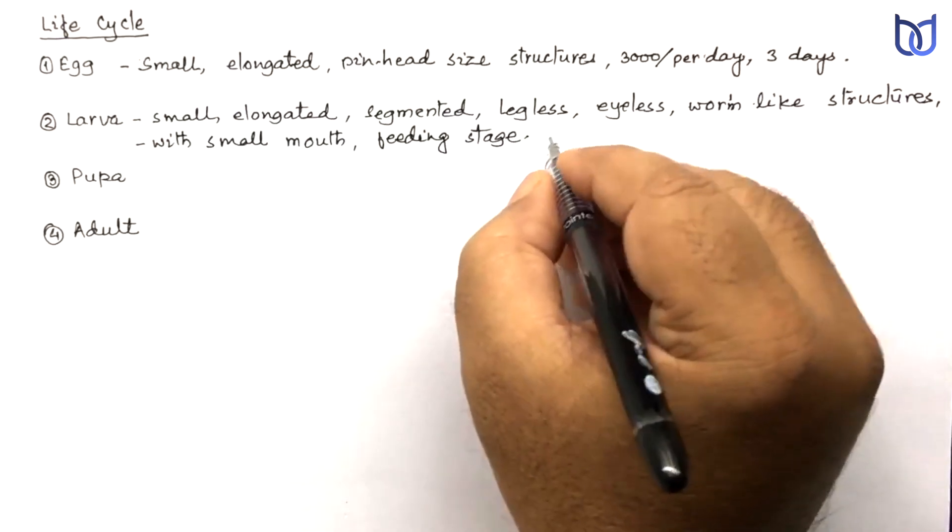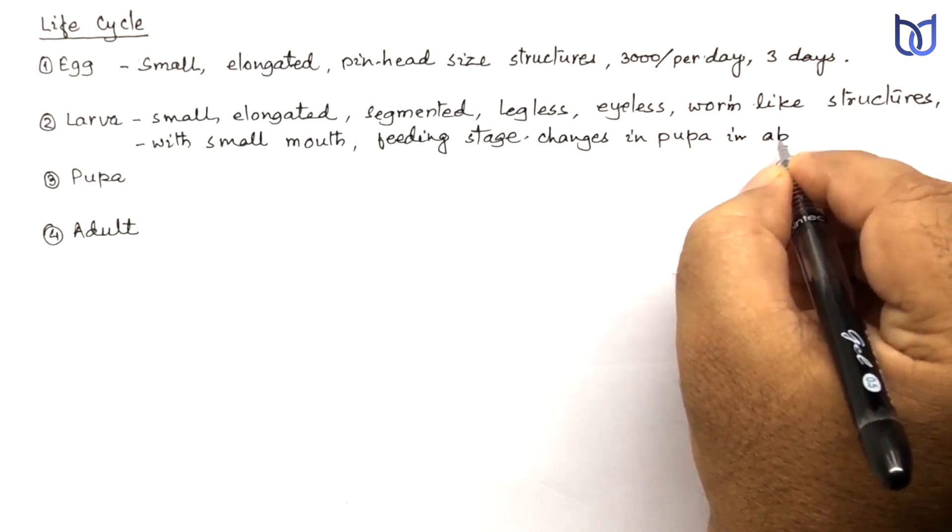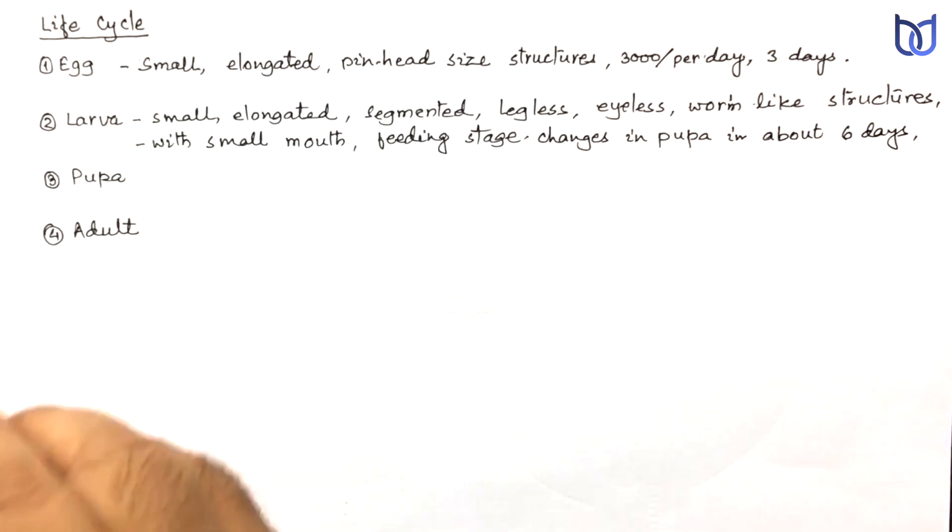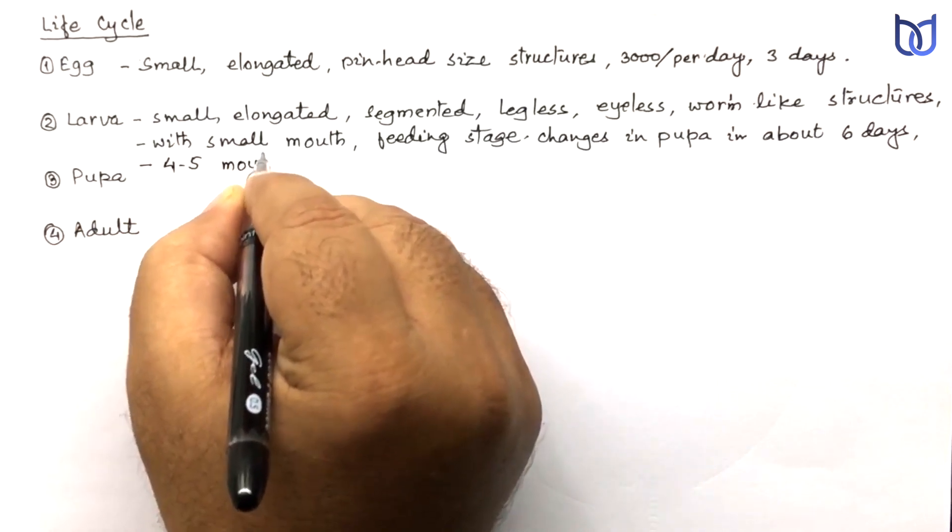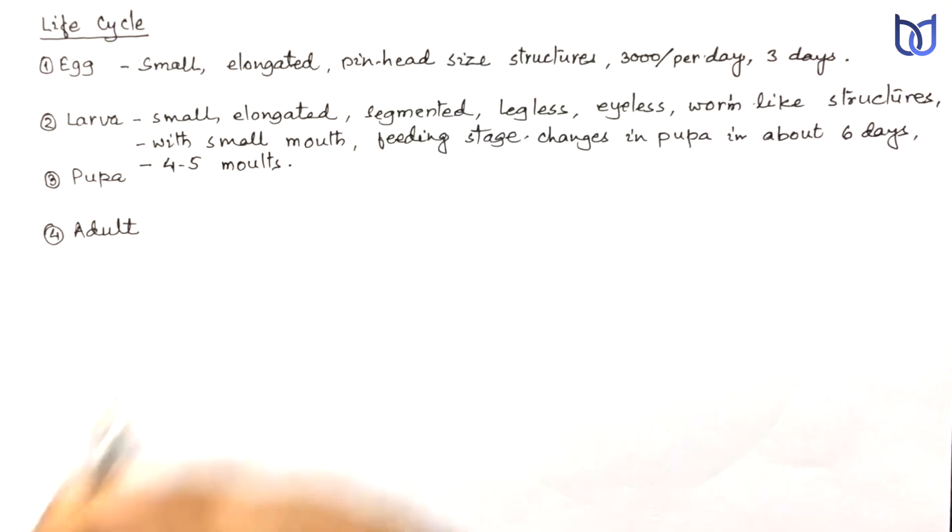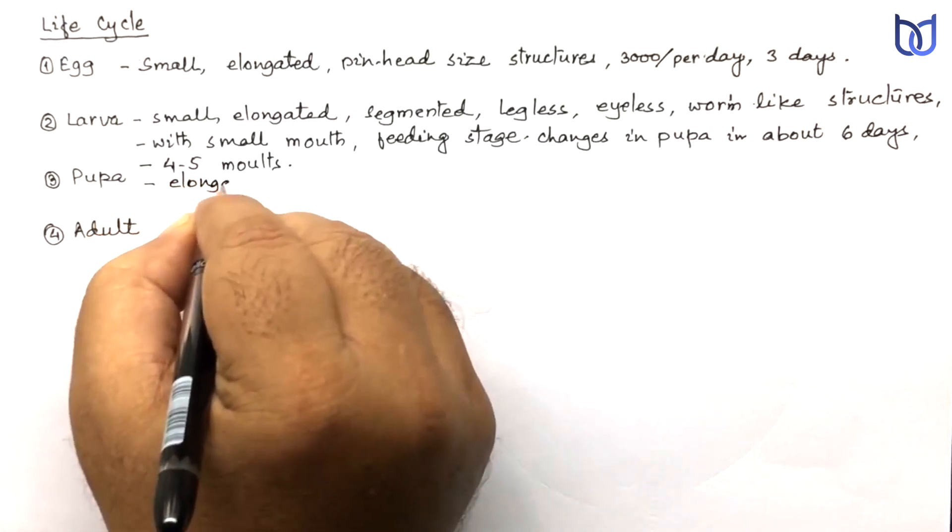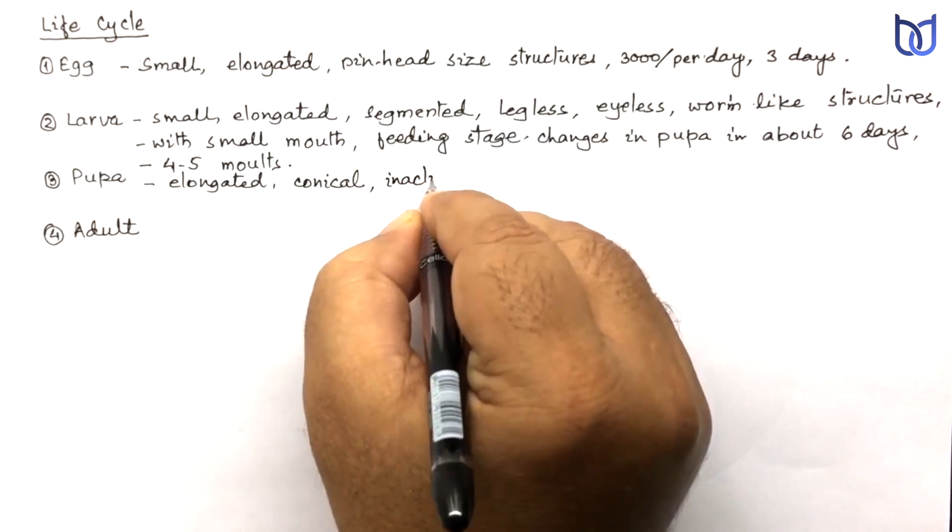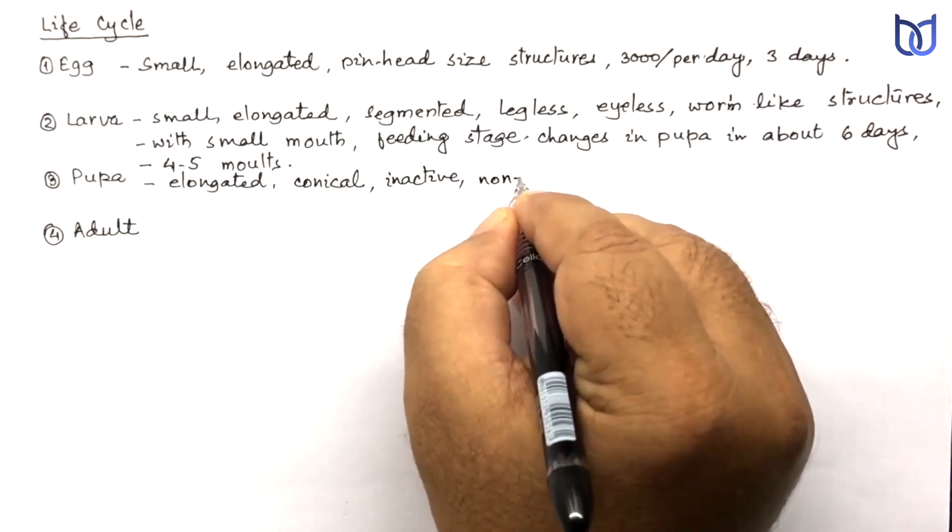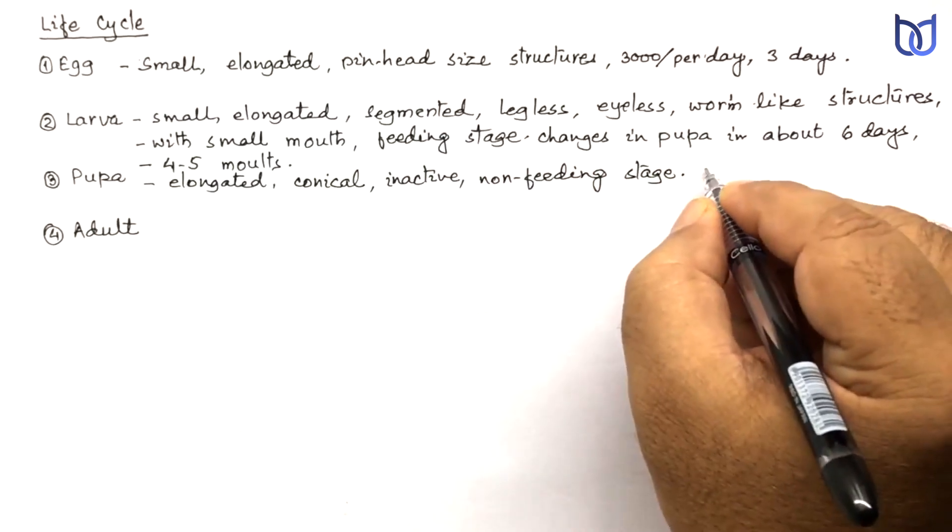Larvae changes into pupae in about six days. During this they change their skin four to five times, that is called molting. So they molt four to five times during their life. Pupa is elongated, conical, inactive, and non-feeding stage. Pupa changes into adult.